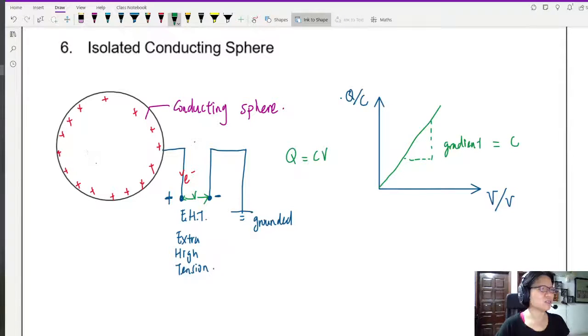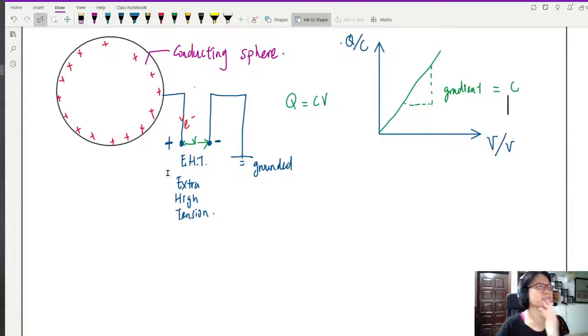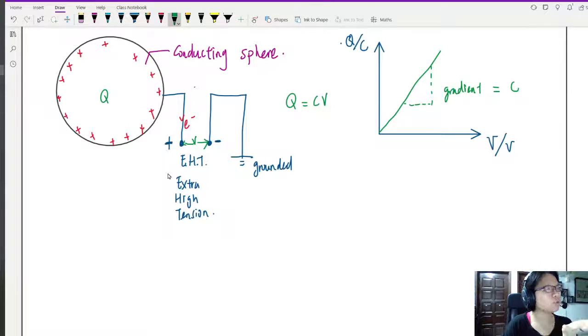From here, you might think of one thing. If the charge stored here is Q and the potential difference is V, I know the value of V on the surface of this sphere, because we are connecting the extra high tension on the surface of the conducting sphere.